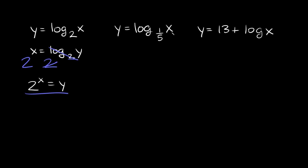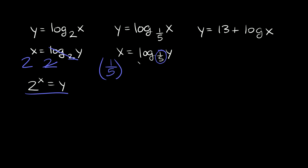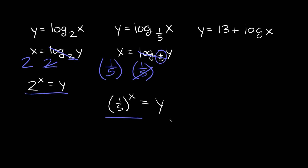Now we have y is equal to log base 1/5 of x. So this becomes x is equal to log base 1/5 of y. To get rid of this log base 1/5, you take the base number and write it as 1/5 raised to the x is equal to 1/5 raised to log base 1/5 of y. These cancel out and all we're left with is 1/5 raised to the x is equal to y.